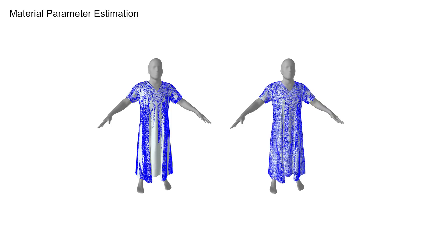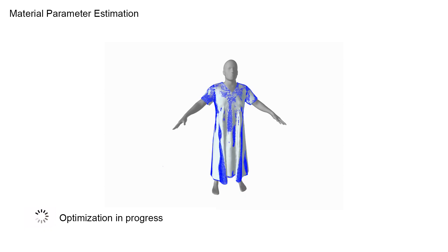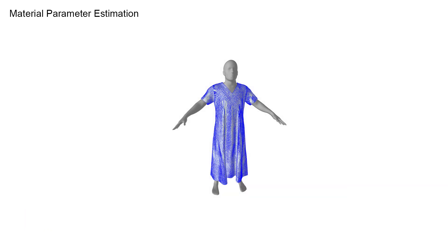As a first application, we estimate the elastic material properties for a cloth. We show that it is possible to recover the bend stiffness of the cloth material so that we can match the shape provided in the blue keyframe starting from the drape on the left. Here we see the optimization happening over several iterations, and it converges quickly to the right solution.